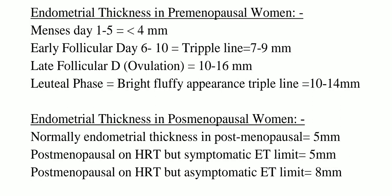For a postmenopausal woman on HRT who is asymptomatic, the endometrial thickness limit is 8 mm. So if the woman is on HRT, we check whether she is symptomatic or not. If symptomatic, we should consider endometrial biopsy at more than 5 mm. If asymptomatic, the threshold for endometrial biopsy is more than 8 mm.